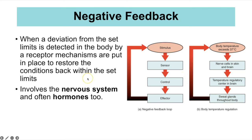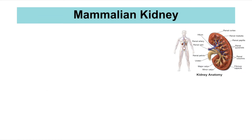This negative feedback involves the nervous system because you need receptors to detect the change, and it often involves hormones too, because those are chemicals that can cause the change to occur.